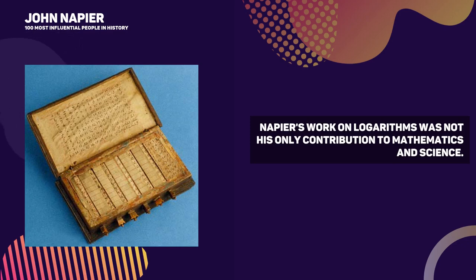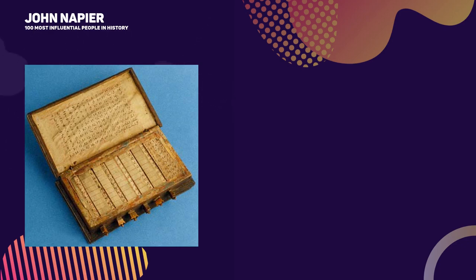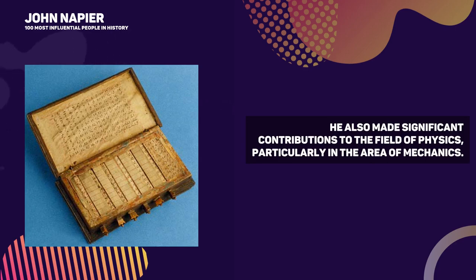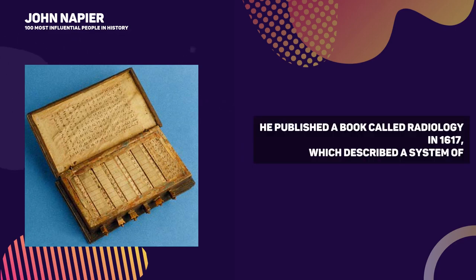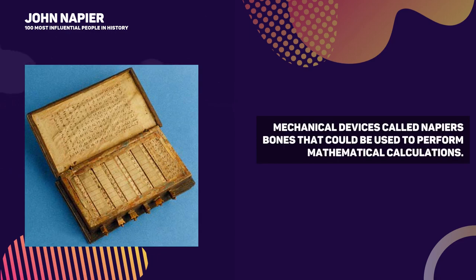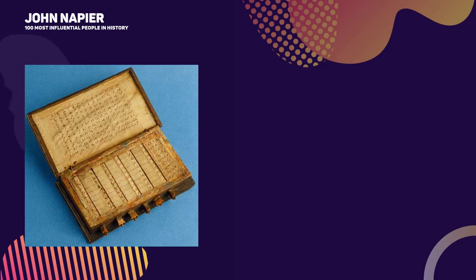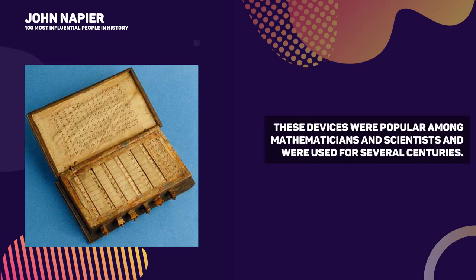Napier's work on logarithms was not his only contribution to mathematics and science. He also made significant contributions to the field of physics, particularly in the area of mechanics. He published a book called Rabdology in 1617, which described a system of mechanical devices called Napier's bones that could be used to perform mathematical calculations. These devices were popular among mathematicians and scientists and were used for several centuries.